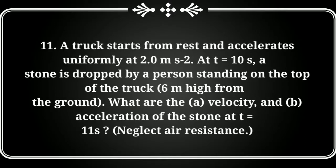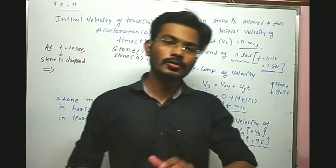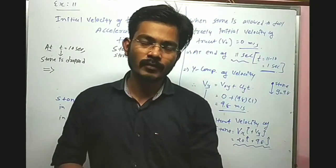Example 11: A truck starts from rest and accelerates uniformly at 2 meter per second square. At t equal to 10 second, a stone is dropped by a person standing on top of the truck, 6 meter high from the ground. We have to find the velocity and acceleration of the stone at t equal to 11 second, ignoring air resistance.